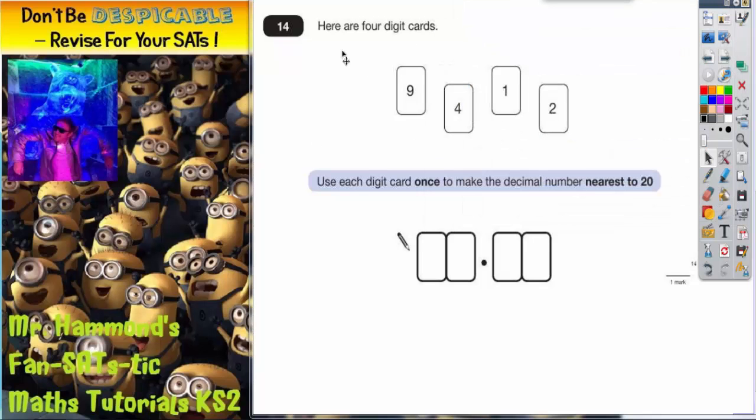Question 14: Here are four digit cards - we've got a 9, a 4, a 1, and a 2. Use each digit card once to make the decimal number nearest to 20. Now straight away you should notice that nearest to 20, we've got a 1 and a 9, so that can make 19. That's going to be close to 20.